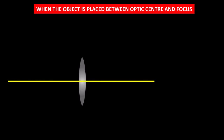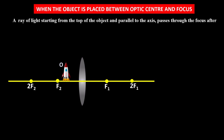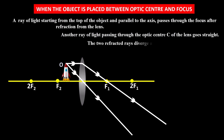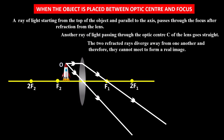Now let us see where the image is formed when the object is placed between the optic center and the focus. Let this be the lens, principal axis, and points on the principal axis. The object is placed between f2 and optic center C. A ray of light from the top of the object, parallel to the axis, passes through the focus after refraction from the lens. Another ray passing through optic center C goes straight without any deviation. The two refracted rays diverge away from one another and therefore cannot meet to form a real image.